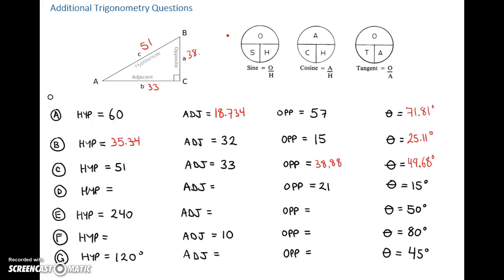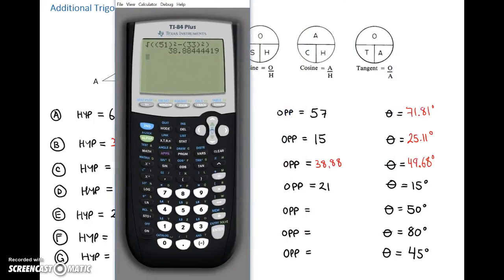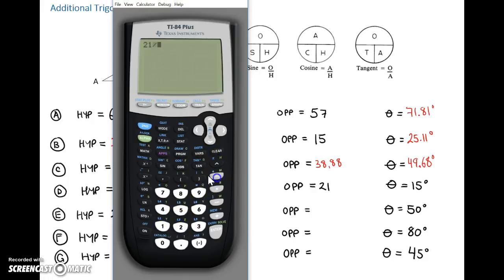That gave us the opposite of 38.88, and the angle for this one was 49.68 degrees. Beautiful. Next one — problem D. Looks like we have the opposite and the angle. The opposite is 21 and the angle is 15 degrees. Why don't we use sine to find that hypotenuse? The hypotenuse will be the opposite divided by sine of the angle — 21 divided by sine of 15 degrees. That's 81.137, so we'll do 81.14.